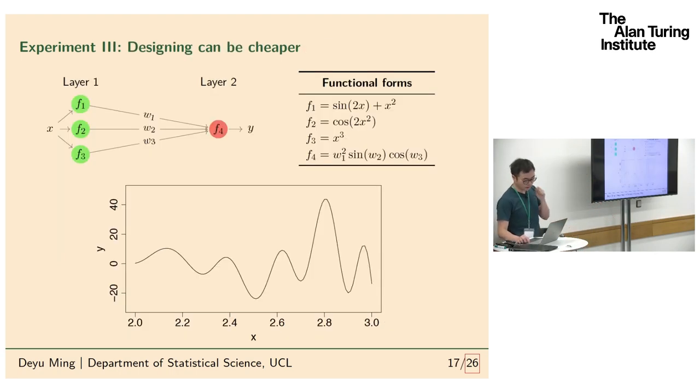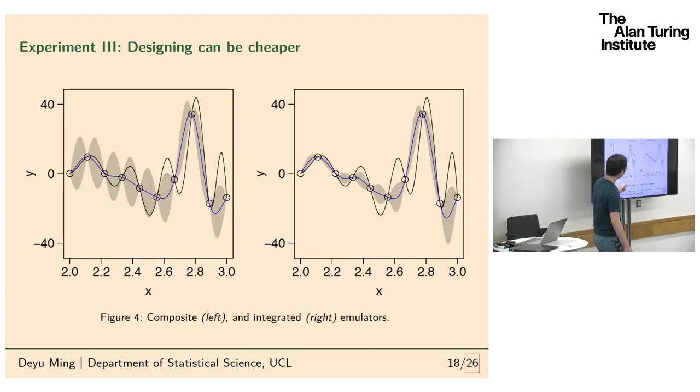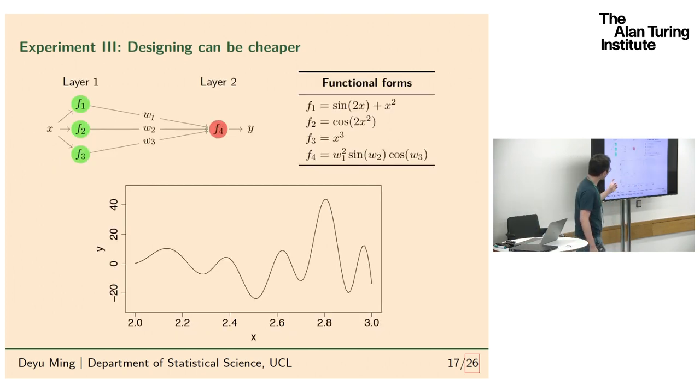The third experiment demonstrates the flexibility of the framework of the integrated emulator. Let's assume these three computer models are expensive to run and this one is very cheap to run. This is the true function. If I do 10 design points, you see both the composite and integrated didn't do very well mimicking the true function. The reason is because the second model has three dimensions, so if you choose 10 design points, when you propagate here it cannot cover most of the parameter space of the second model. That's why even the integrated emulator cannot mimic the true function.